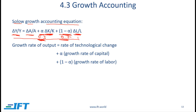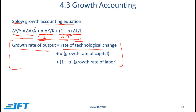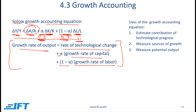If labor changes by 1% and everything else remains constant, then output will change by 0.7%. The growth accounting equation in words: the growth rate of output is equal to the rate of technological change, plus alpha times the growth rate of capital, plus 1-alpha times the growth rate of labor. There are several uses of the growth accounting equation.